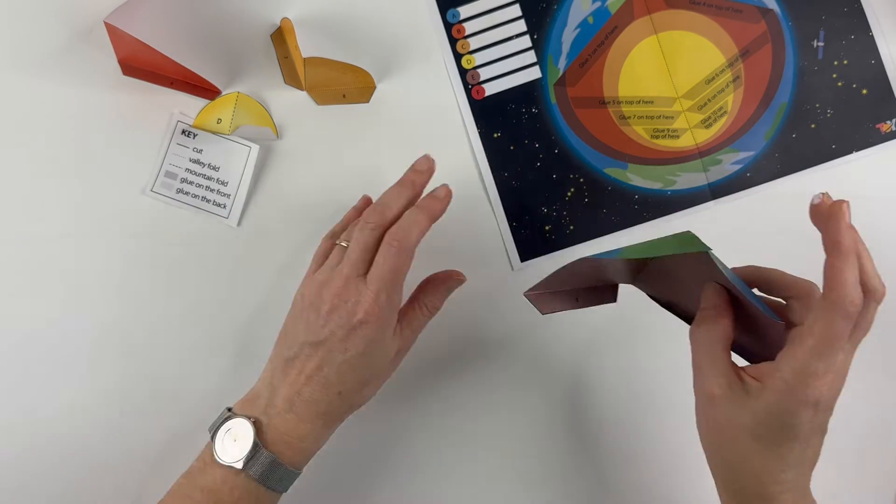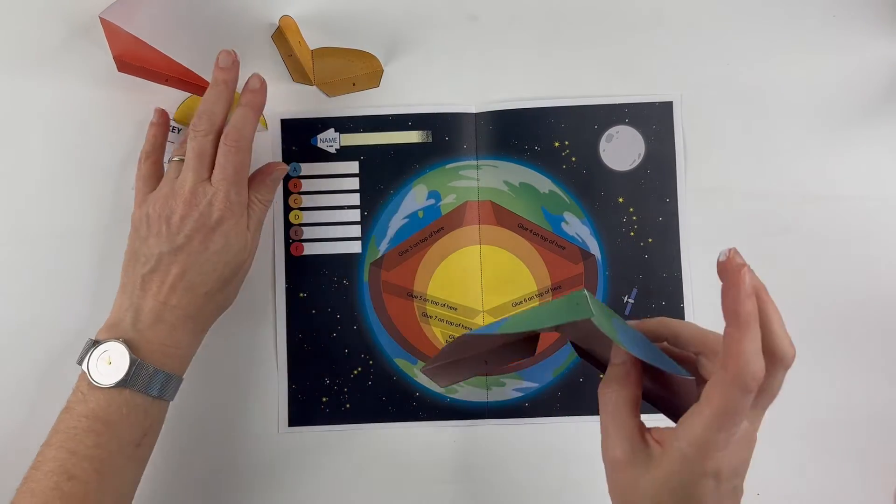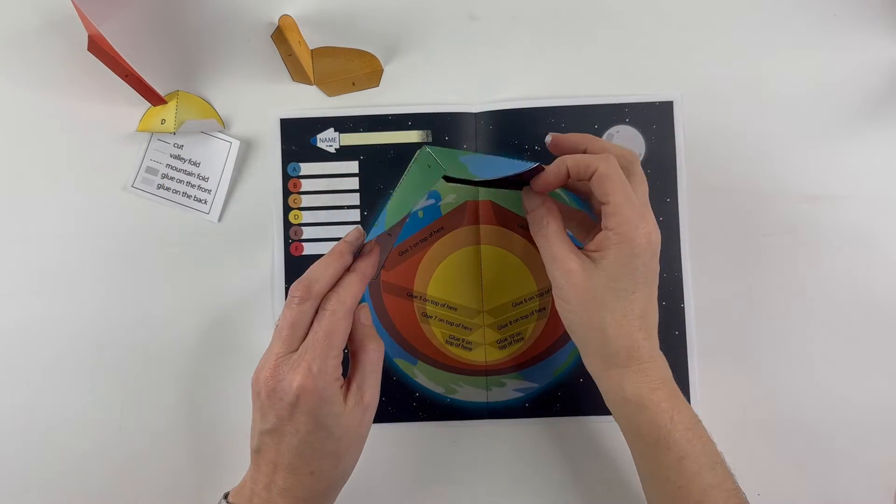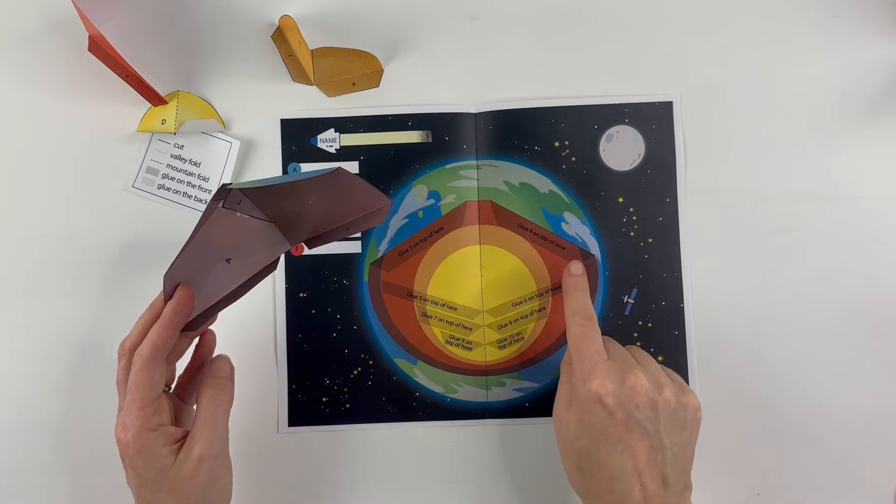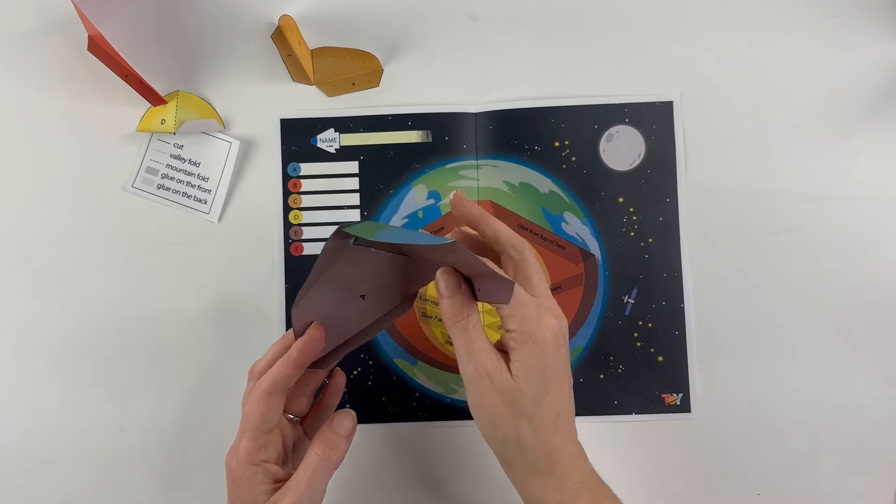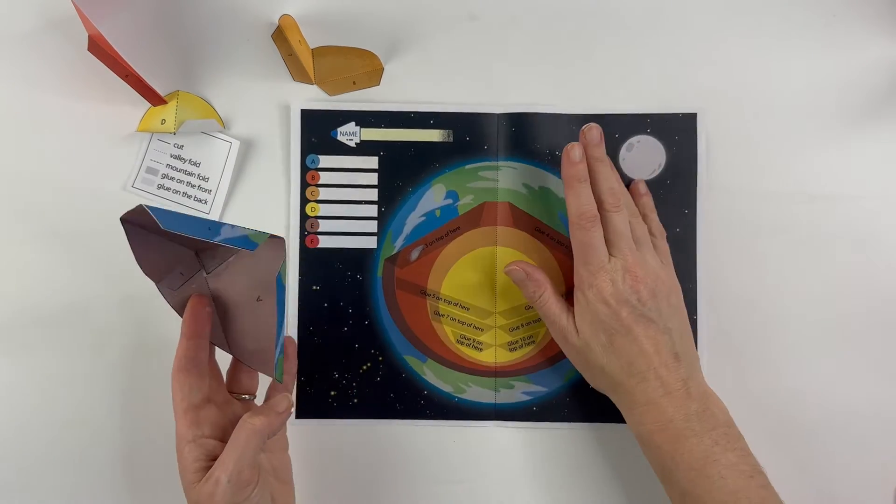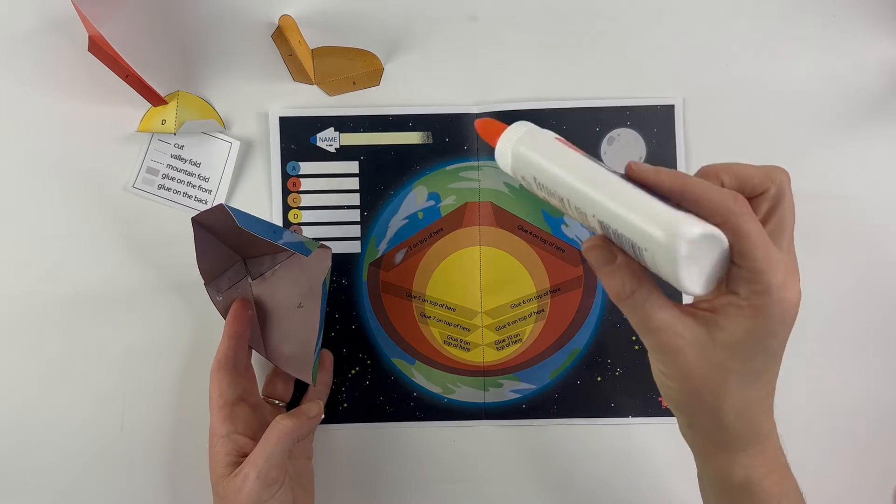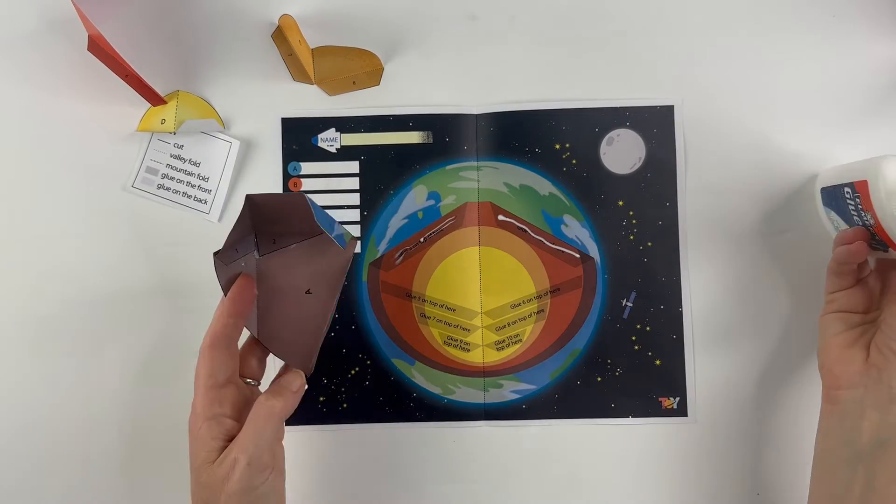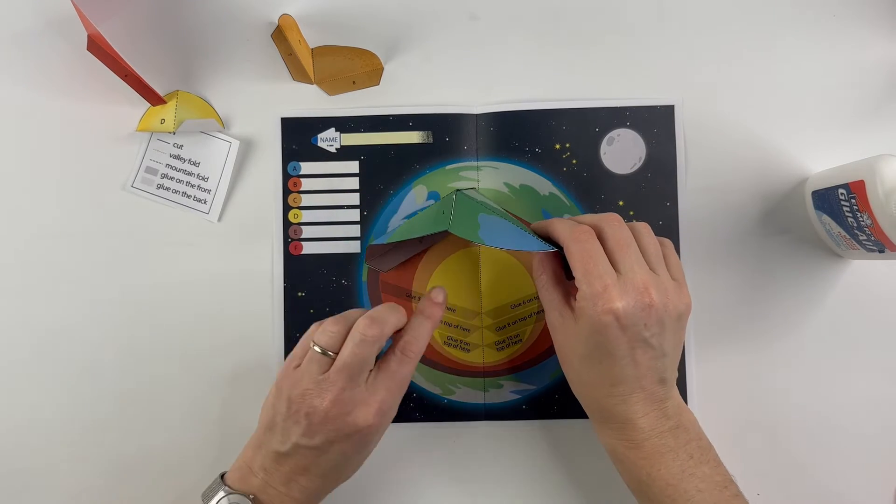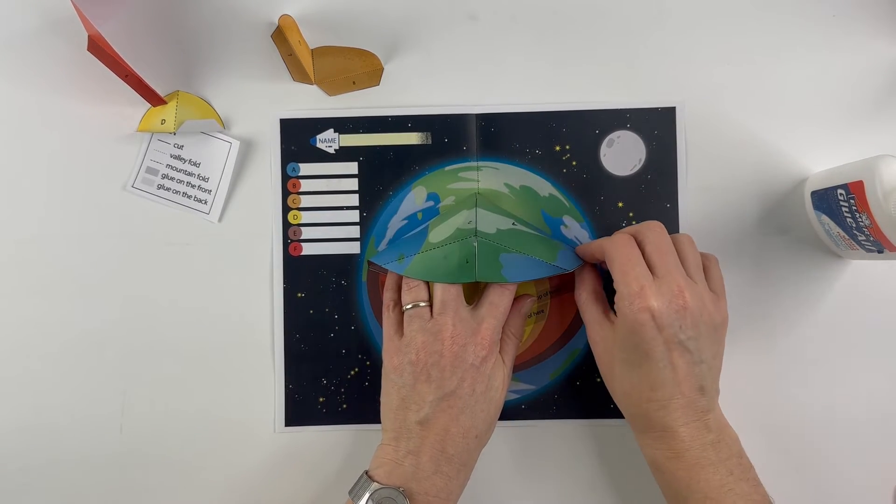And then the next step is, you'll notice this has a three and a four. So this says glue three on top of here, glue four on top of here. So I'm going to take some of the leftover glue I have from gluing the crust of the earth and a little bit more from my bottle. And I will glue this here and like that.